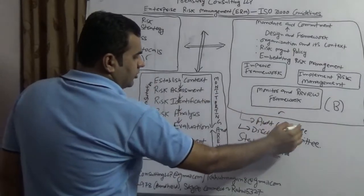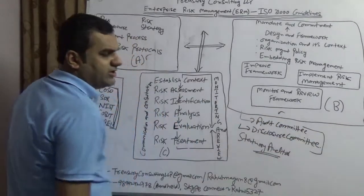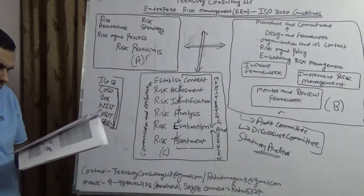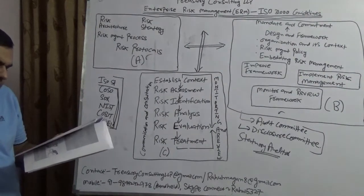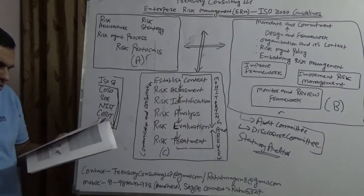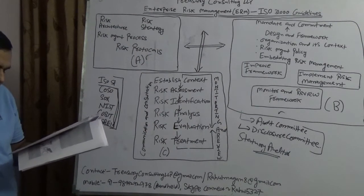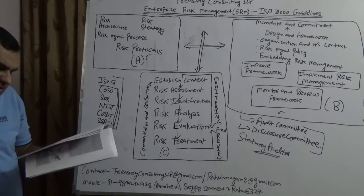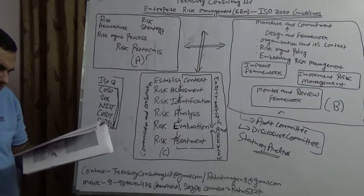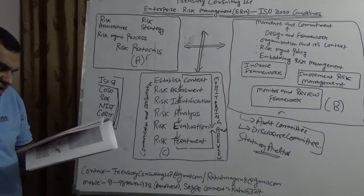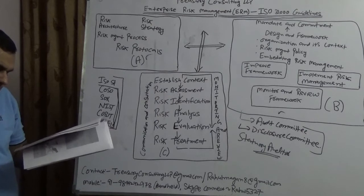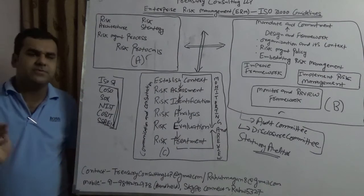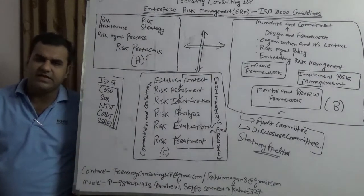The risk architecture, strategy, and protocol represent the internal arrangement for the communication on risk issues. It also sets out the roles and responsibility of the individuals and committees that support the risk management process, which is audit committee and disclosure committee. The risk strategy should set out the objective that risk management activities in the organization are seeking to achieve. Finally, the risk protocol describes the procedures by which the strategy will be implemented and the case is managed.